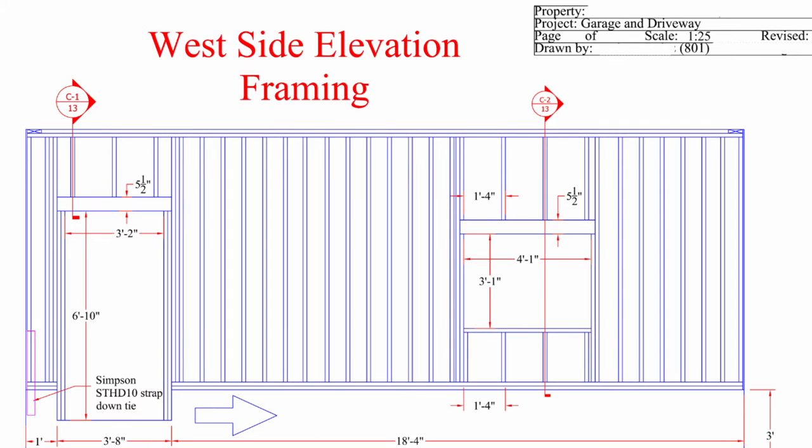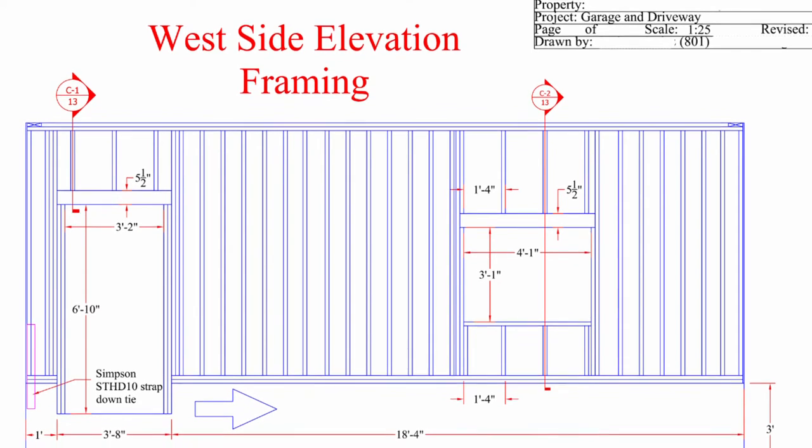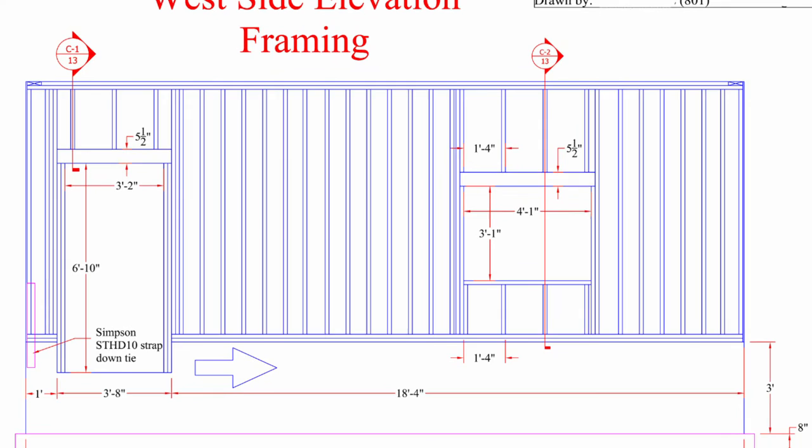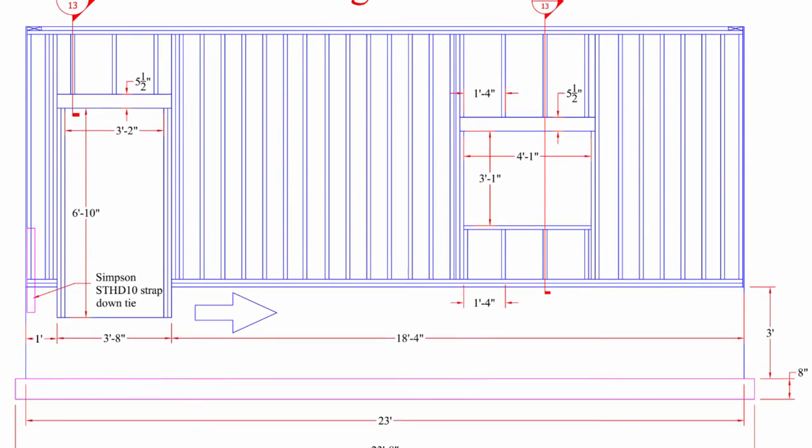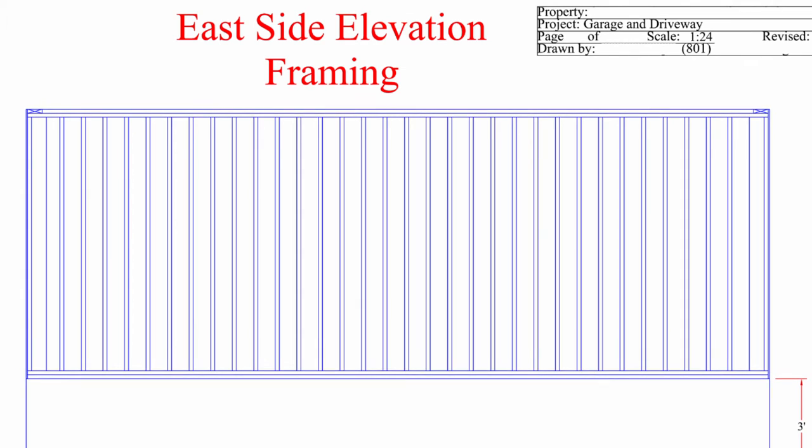On the west side I have my standard door opening. I have cross sectional view C1, C2, what page number it's on. Again the concrete wall and the footing. And also the Simpson strap down tie. This is just a wall here with no windows so it's fairly simple.